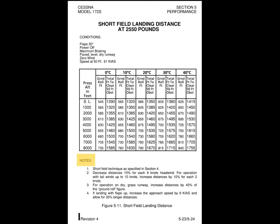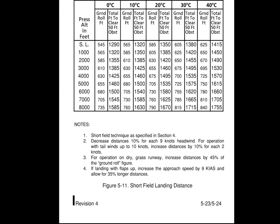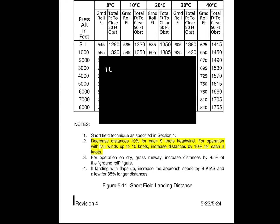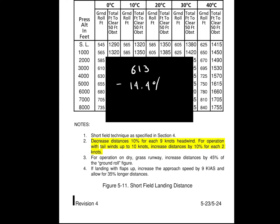After that, we will have to refer to our notes section and see which one applies to us. In this case, considering we have 13 knots of headwind, we will have to decrease our landing distance based on what note 2 says, which is the only one that applies to our current scenario. The note states that we have to decrease our landing distance 10% for each 9 knots of headwind. And considering we have 13 knots, the same math process that we applied for takeoff has to be applied here, which consists of multiplying 13 times 10 and dividing that result by 9. The answer to that is 14.4%, so our last step will be to subtract 14.4% from our distance of 613 feet, which will give us a final landing ground roll distance of 524.72 feet.